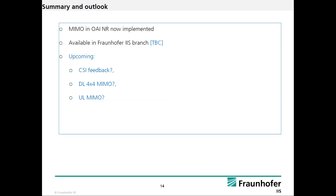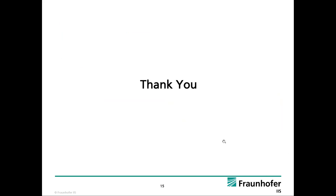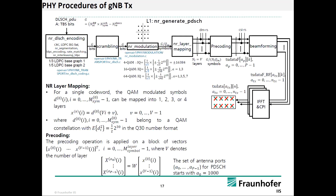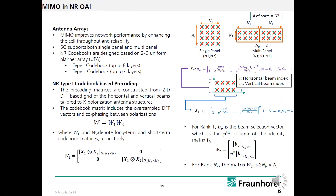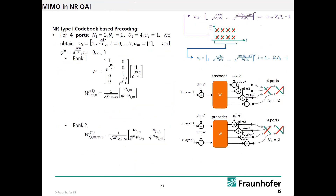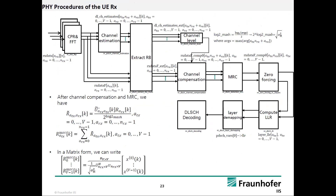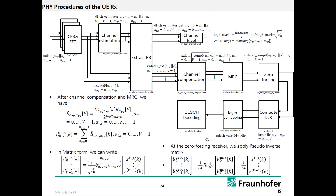Now we come to the summary and outlook. The MIMO feature is implemented in OpenAirInterface. We will keep our work until we finish the 4x4 MIMO supporting up to four layers, and we welcome more contributors to finish other features such as CSI feedback and uplink MIMO. This is what I have. The additional slides I supported here explain the full functionality — layer mapping, pre-coding, DMRS, pre-coding type one intended for the downlink shared channel for different numbers of ports, and the receiver design. You are welcome to have them as a document for our work.